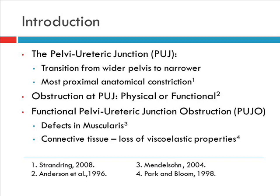Defects in the muscularis and possibly connective tissue affecting the viscoelastic properties of the junction have been implicated, but still much is not known about the etiology.